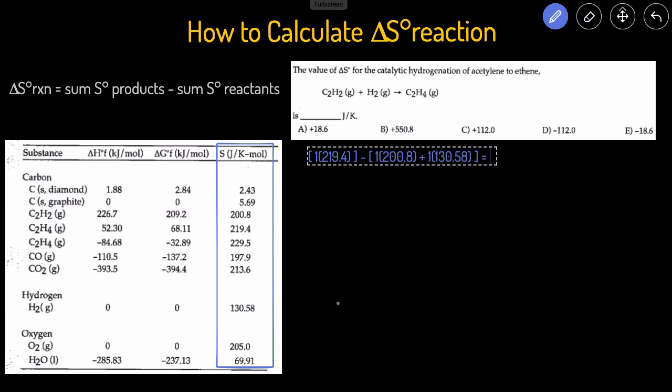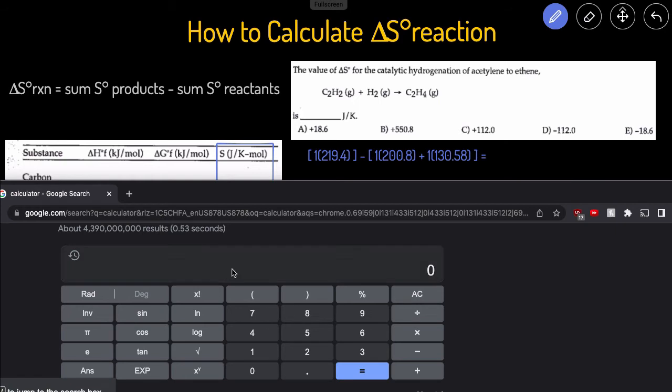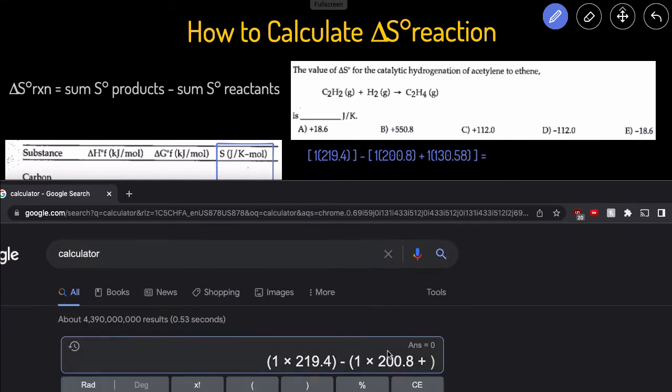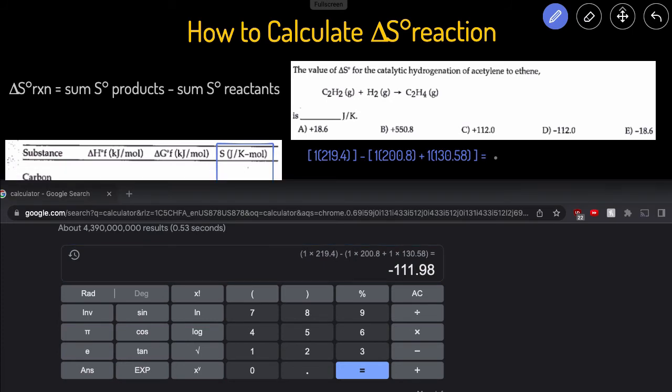Now let's enter this in the calculator. I'm going to pull up a Google calculator and show you how this is done. So we'll first do 1 times 219.4. That's going to be the sum of the products minus the sum of the reactants. I'm going to use the parentheses as the brackets. 1 times 200.8, plus 1 times 130.58.